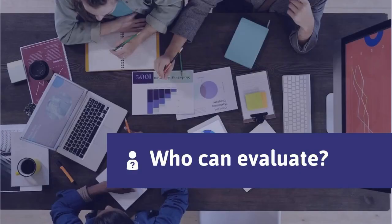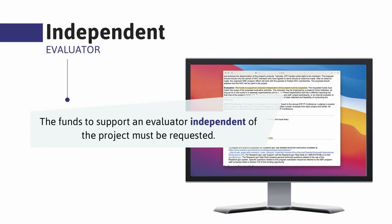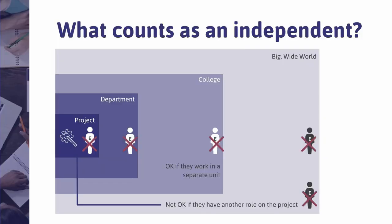Now, who can do the evaluation? Jen has smart people on her team, but the short answer is no, they can't evaluate internally, because the ATE program specifically states that the evaluator must be independent of the project. According to the ATE program solicitation, the evaluator may be employed at the project's home institution as long as they work in a separate unit with a different reporting line — such as a different academic department or institutional research office. While some large institutions might have that capacity, this can become practically impossible at smaller institutions.